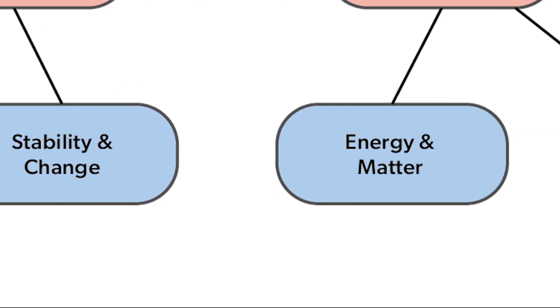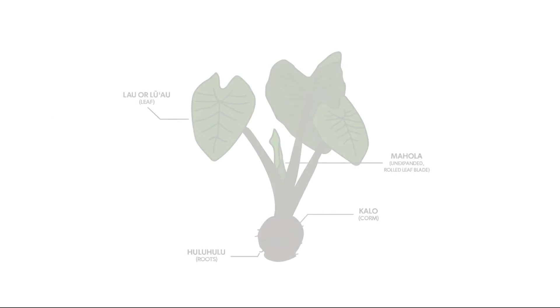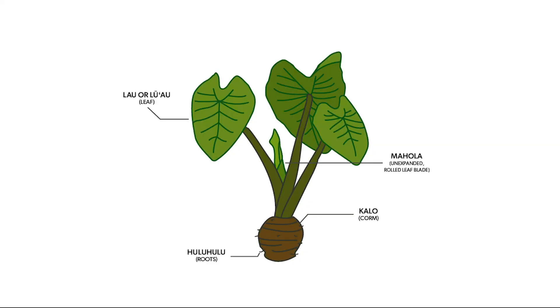Energy and matter can explain why a pattern happens. The total amount of energy and matter does not change. Tracing matter and energy helps us understand why things happen. We can trace the movement of matter in and out of systems like the Kahlo plant. We can describe how energy from the sun is used by the Kahlo and how the Kahlo is a source of energy for animals.